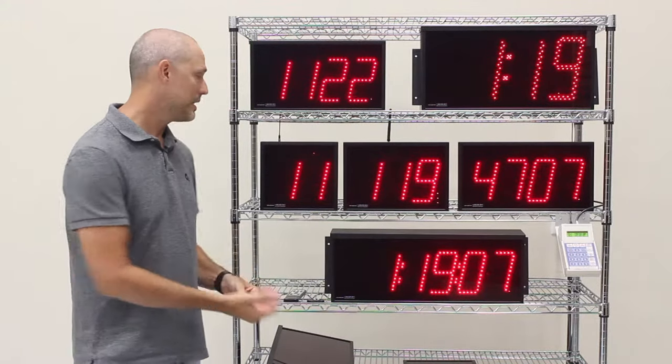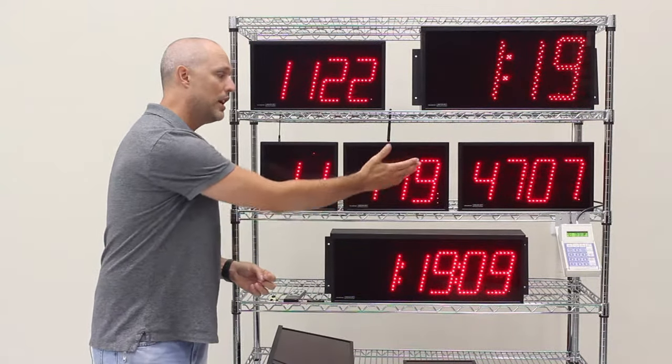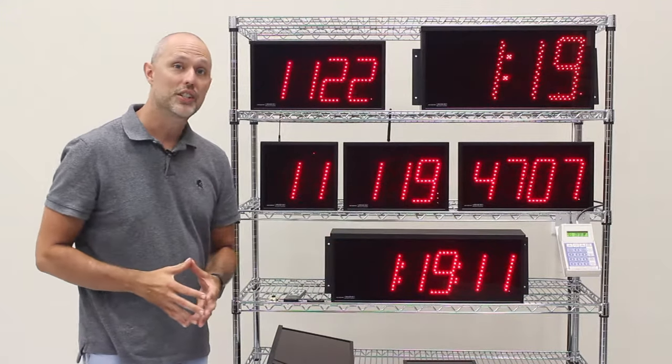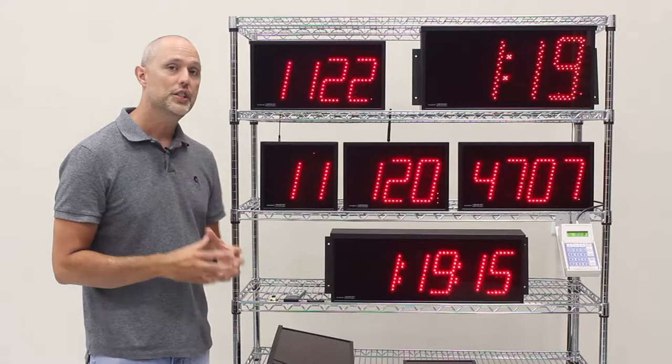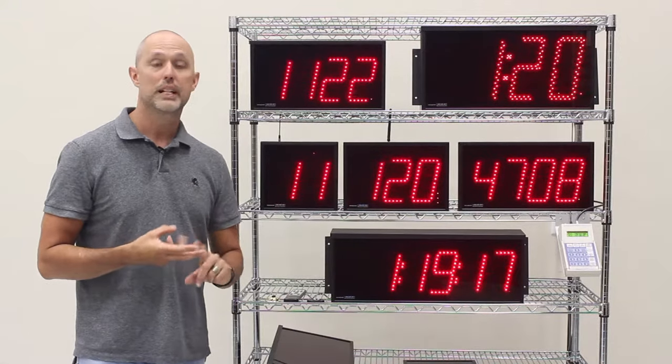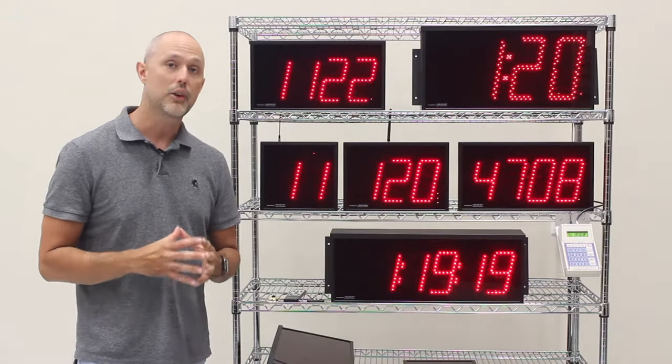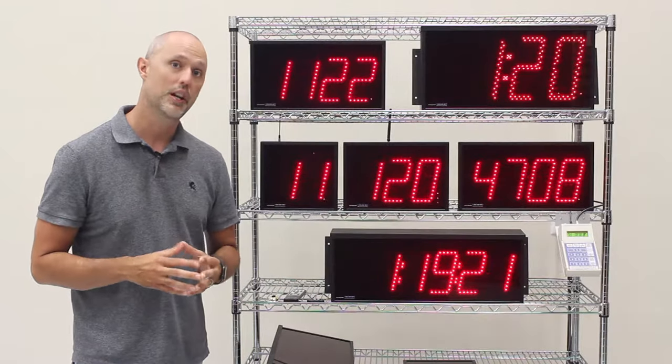So to get started you're going to want to decide whether you need two, three, four, or six digits of time on your display. If you choose a two digit just be aware that it will show hours, minutes, or seconds, but you have to select just one of those options.